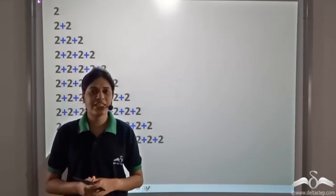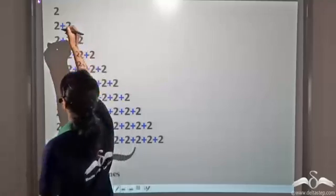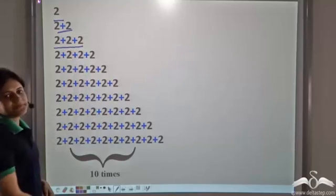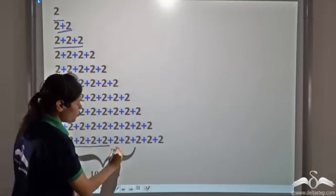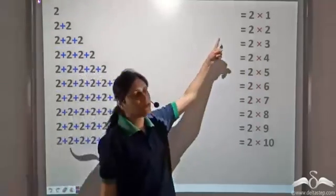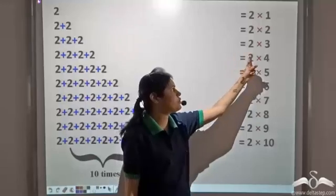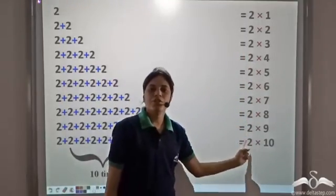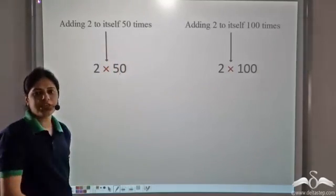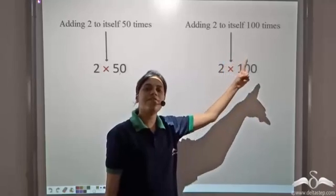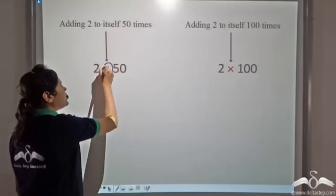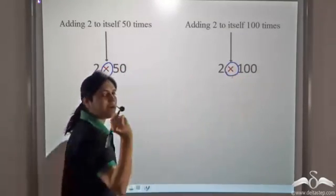What happens if we keep on adding two to itself? This is two, this is two added twice, this is two added three times, and this is two added ten times. We know that this can be written as two into one, two into two, two into three, and two into ten. Similarly, two added fifty times can be written as two into fifty, and two added to itself a hundred times can be written as two into hundred, and we know that this operation is multiplication.